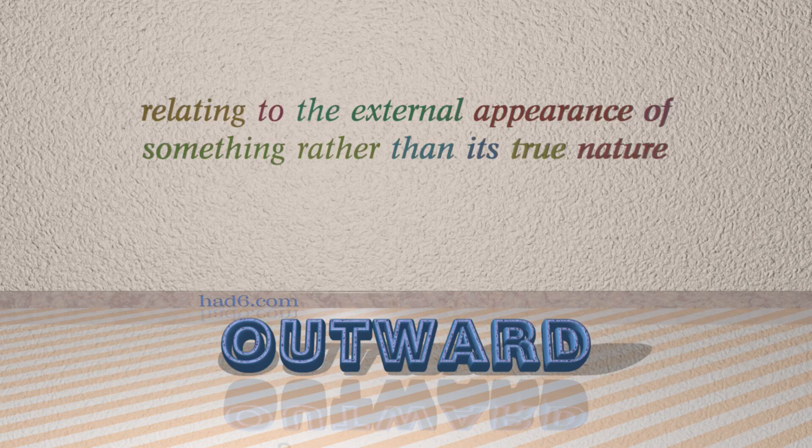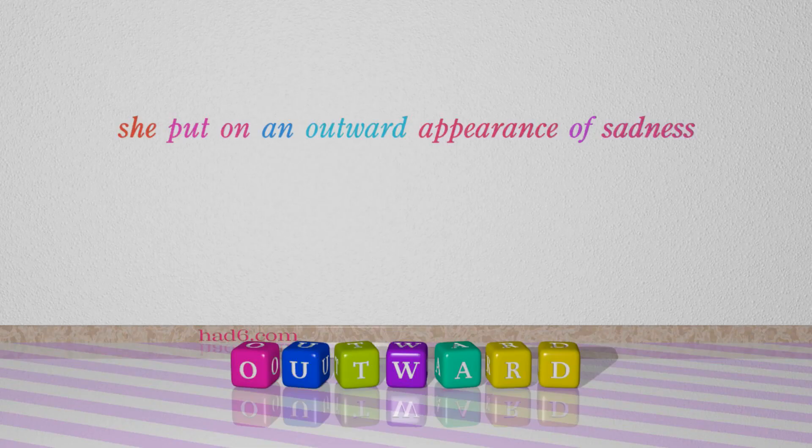Number 5: Outward, which means relating to the external appearance of something rather than its true nature. For example, she put on an outward appearance of sadness.